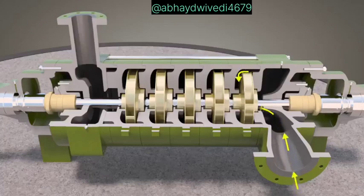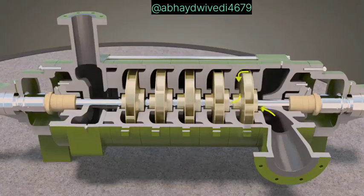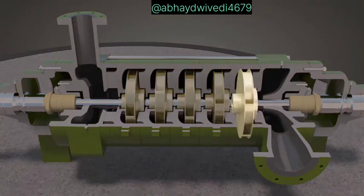The suction port directs fluid to the first impeller. One impeller for each stage is attached to the shaft.